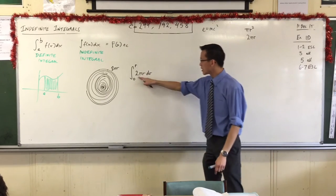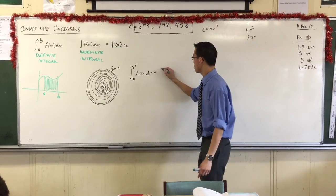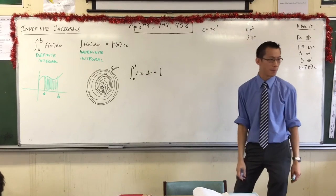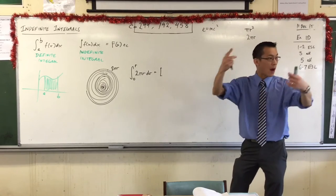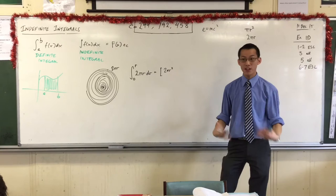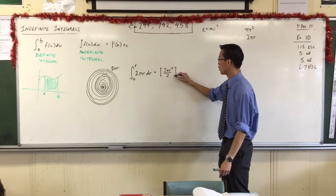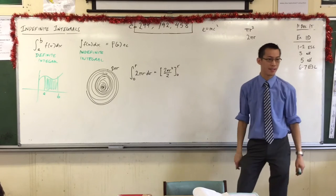So when you look at this, this is just a function, it's just a polynomial. All you have to do is the power thing. What's the primitive of 2πr? You do what you normally do, you raise the power to 2, and then you divide by that power, and you've got your lower and upper boundaries there.